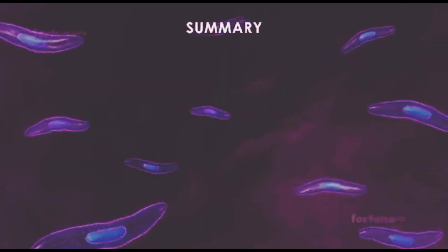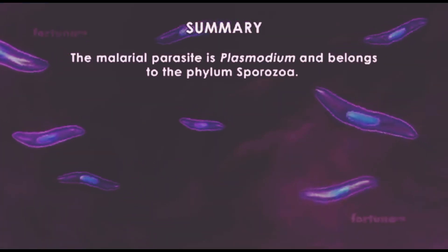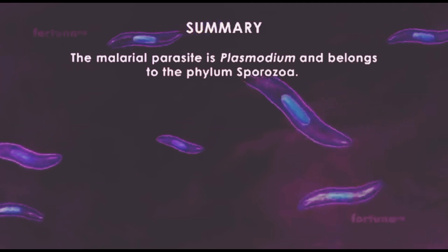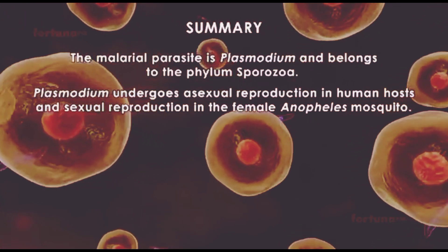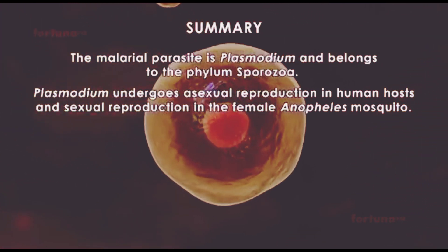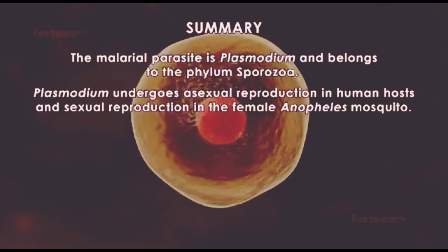Summary: The malarial parasite is Plasmodium and belongs to the phylum Sporozoa. Plasmodium undergoes asexual reproduction in human hosts and sexual reproduction in the female Anopheles mosquito.